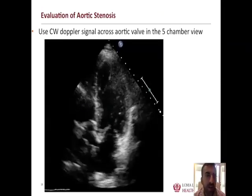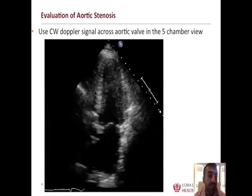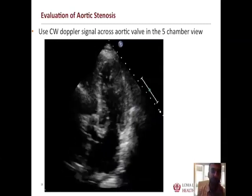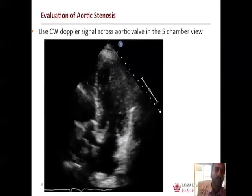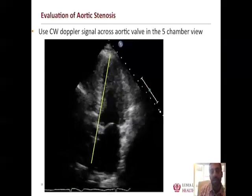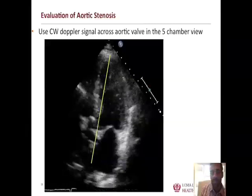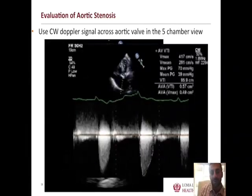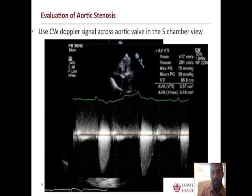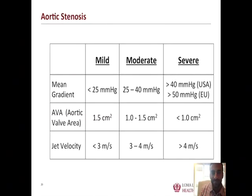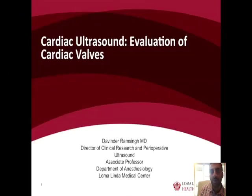Finally, for evaluation of potential aortic stenosis or any valve stenosis: get your 2D picture, then align the continuous wave Doppler — represented by a yellow line across the aortic valve — engage it, evaluate flow acceleration, and get your measurements and gradient calculations. A reference table allows you to designate the severity of that stenosis, completing the utility of point-of-care ultrasound for the evaluation of cardiac valves.